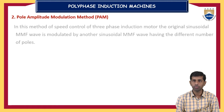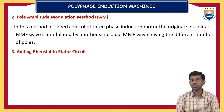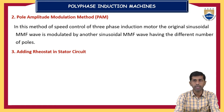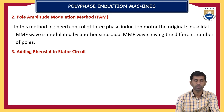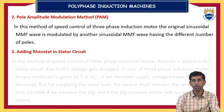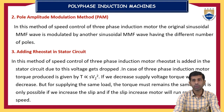Another method is the pole amplitude modulation (PAM) method. In this method of speed control, the original sinusoidal MMF wave is modulated by another sinusoidal MMF wave having a different number of poles. We control the speed of the induction motor by this phase modulation — that is, pole amplitude modulation. The original sinusoidal MMF wave is modulated with another sinusoidal MMF wave having a different number of poles, changing the effective pole count and thus the speed.